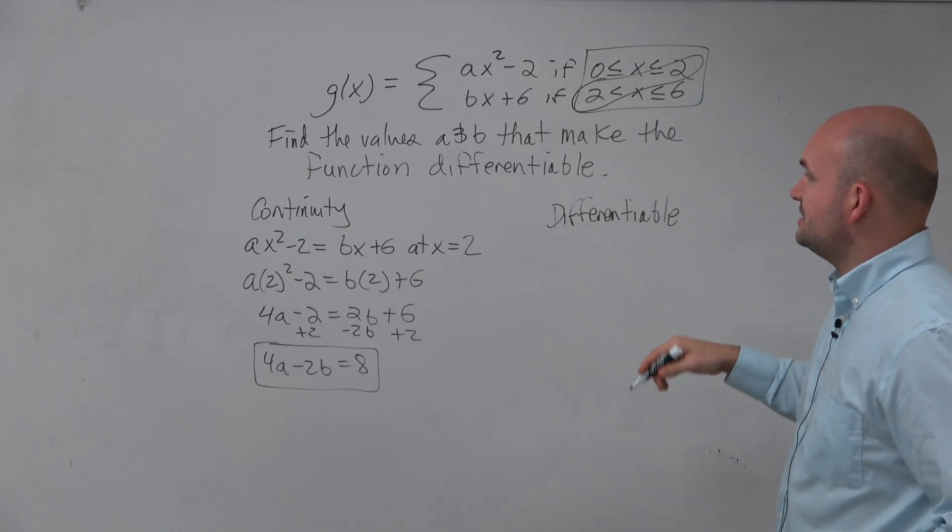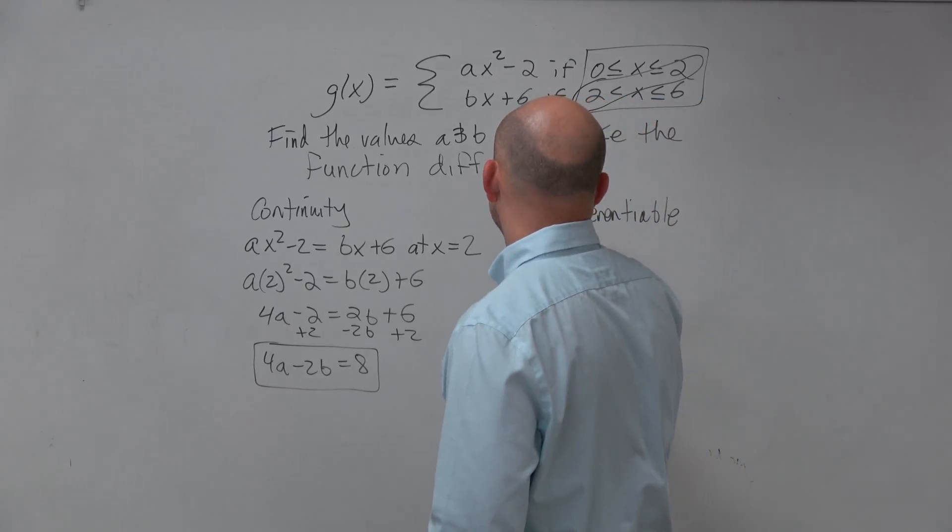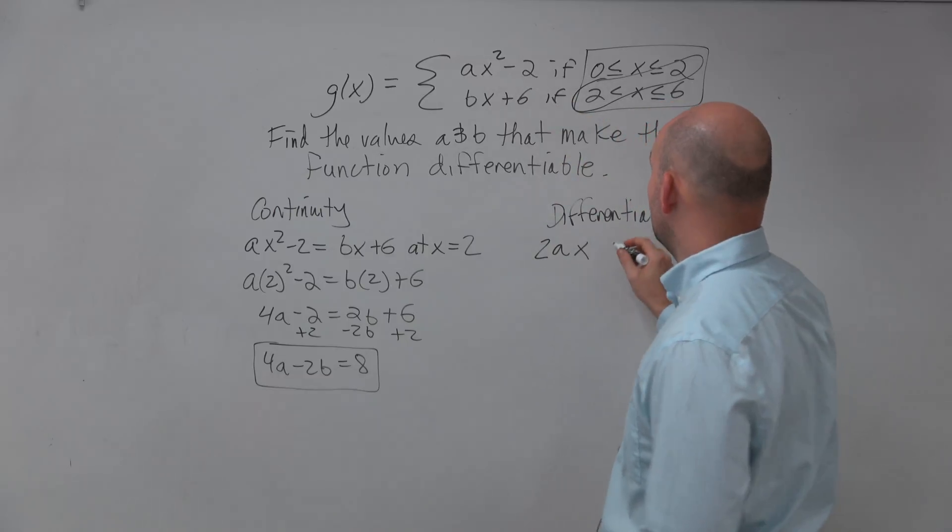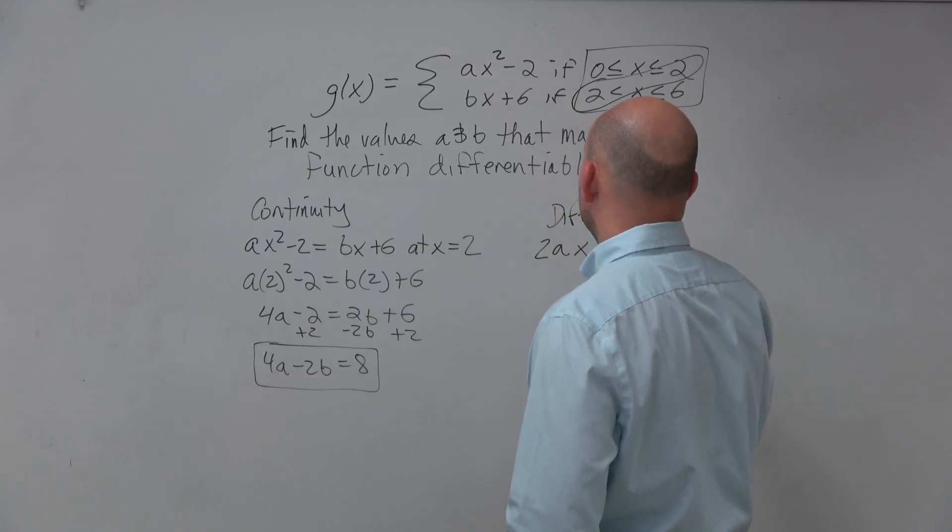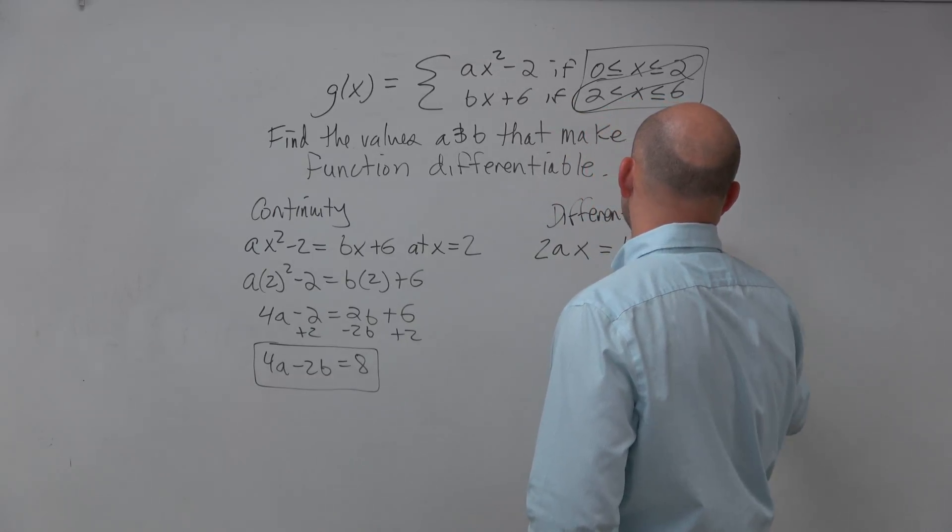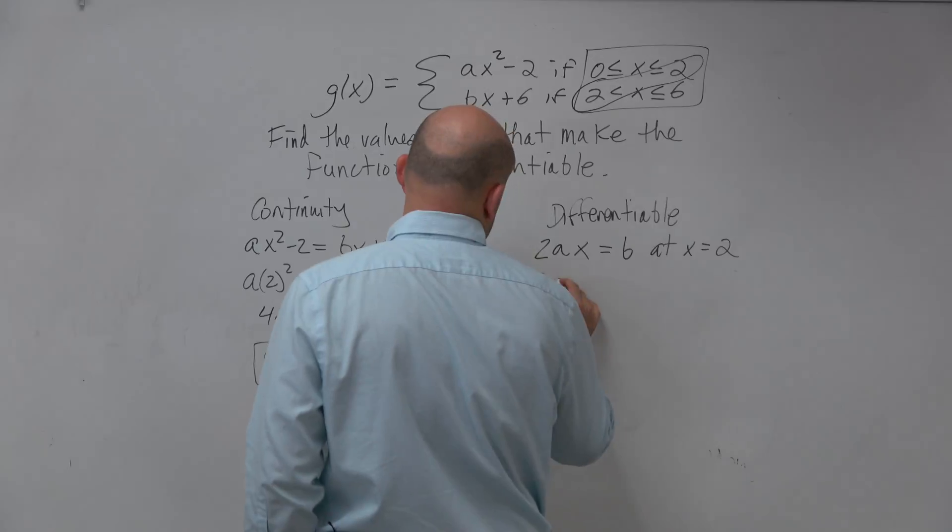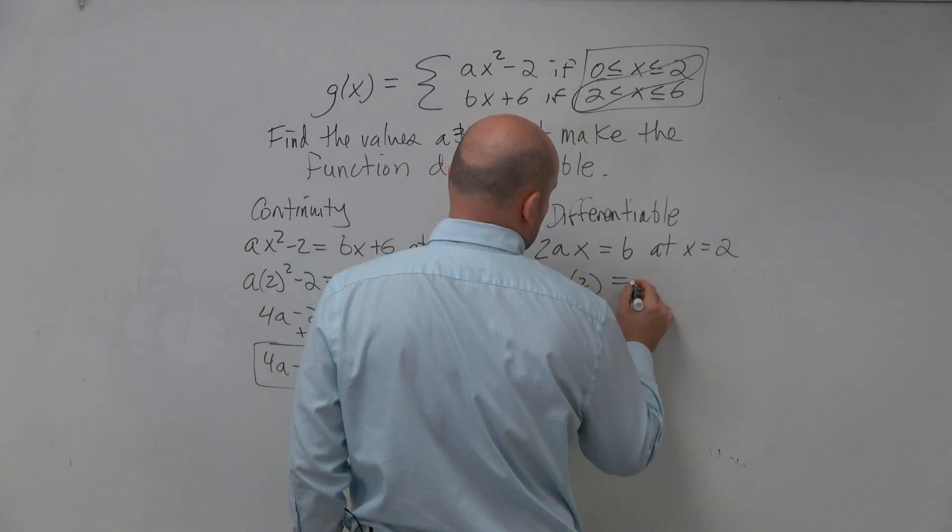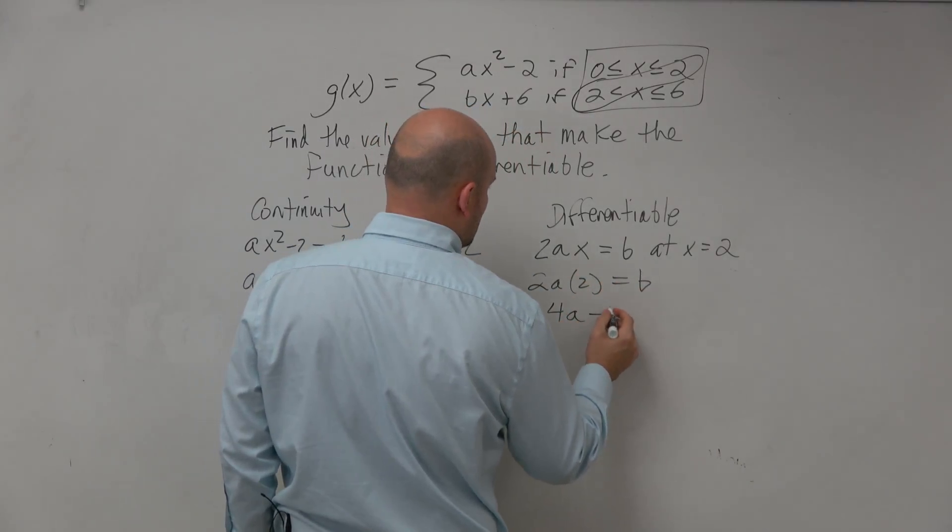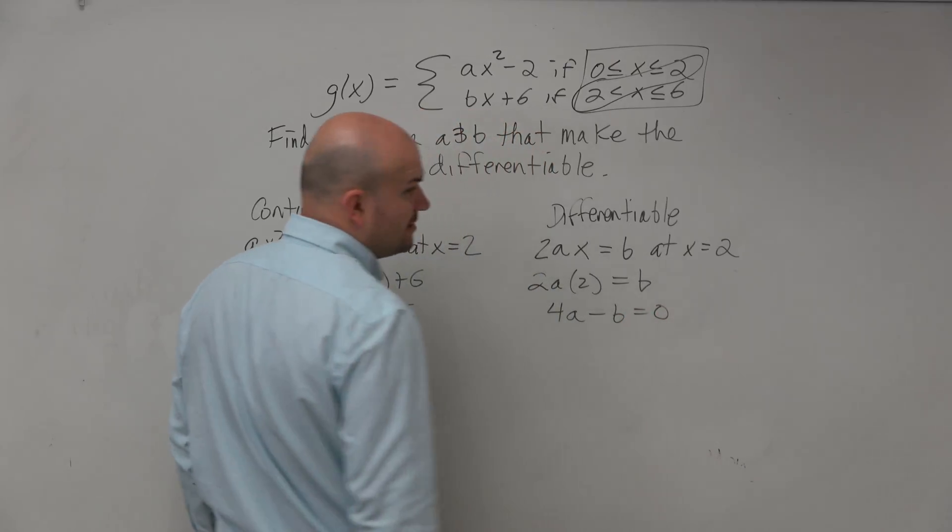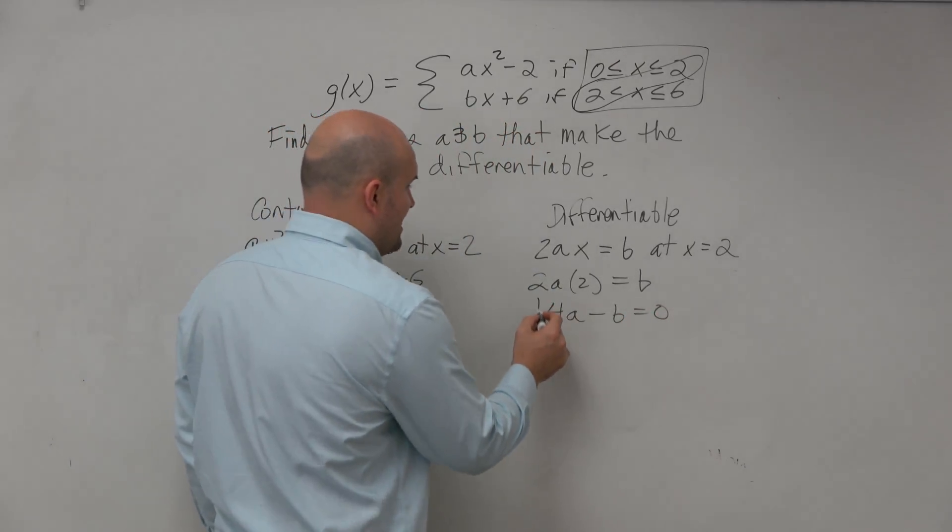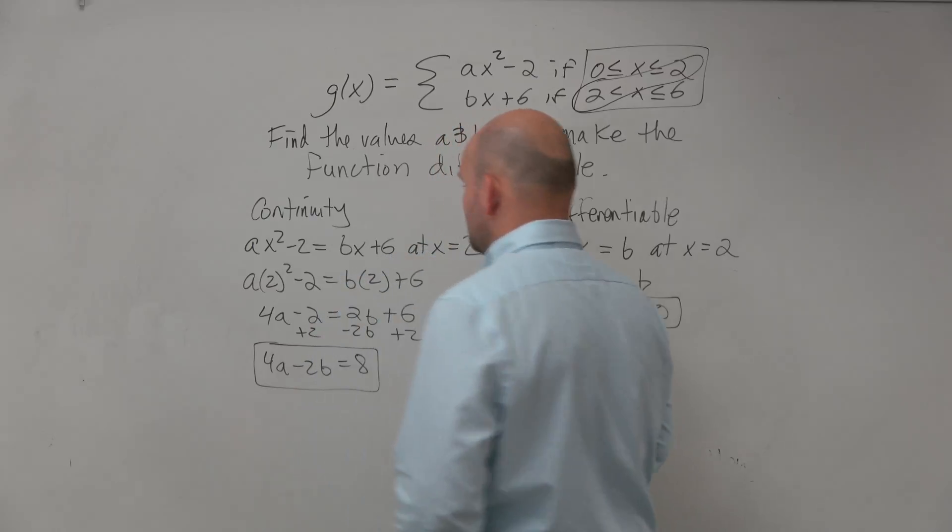So to do that, we're going to take the derivative of the top, which is just going to be 2ax, constant goes to 0, has to equal b at x equals 2. So we have 2a times 2 equals b, 4a minus b equals 0. So that's my second equation.